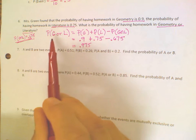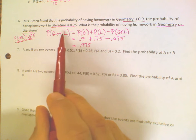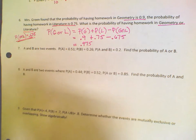So the probability of having homework in geometry or literature is almost 100 percent. You almost have homework every day in one of those two classes. Of course. Thank you.